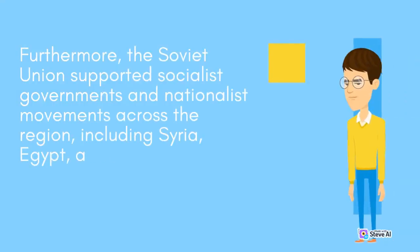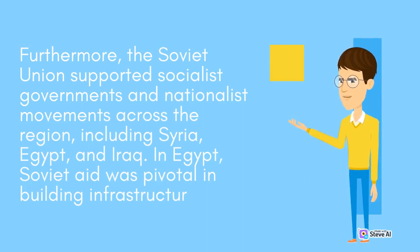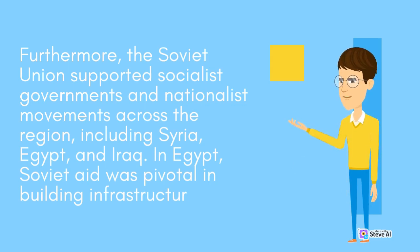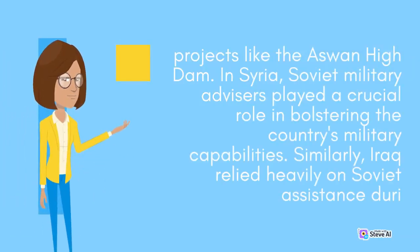Furthermore, the Soviet Union supported socialist governments and nationalist movements across the region, including Syria, Egypt, and Iraq. In Egypt, Soviet aid was pivotal in building infrastructure projects like the Aswan High Dam.